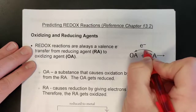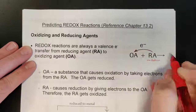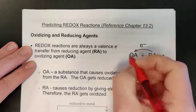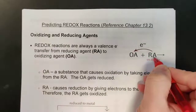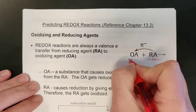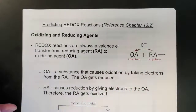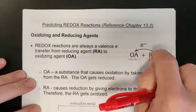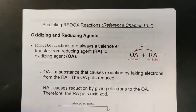Therefore electrons are lost and go somewhere — in this case to the OA. The OA causes oxidation in something else, therefore it must undergo reduction. So it's that whole idea of two sides of the very same coin. It all depends on how you want to look at it, either from the processes or from the label of agency, and OA and RA become a little bit easier for us especially as we start looking at how to come up with these redox equations.